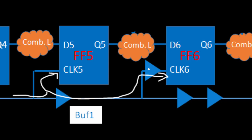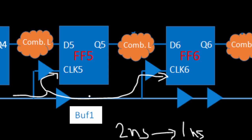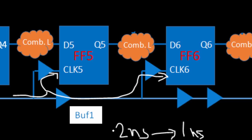The second method is, instead of removing that buffer, you can add one buffer on the other path. Relatively, instead of decreasing from two nanoseconds to one nanosecond by removal, you keep the existing buffer and add one buffer here — also achieving a one nanosecond difference. The third option is you don't touch that buffer, don't add anything there, but remove this other particular buffer. So you have three options: remove this buffer, add one buffer on another branch, or remove this other buffer.